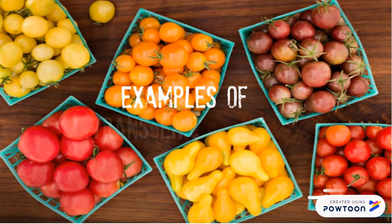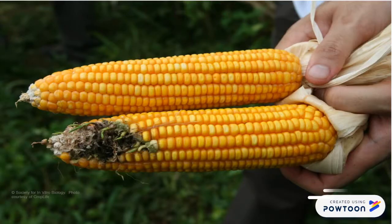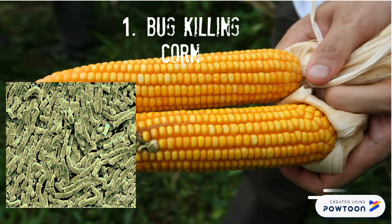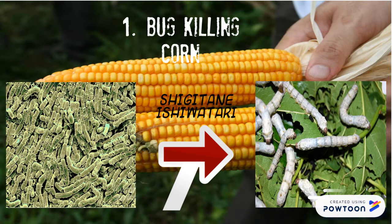I'm going to proceed with the examples of transgenic plants. The first example is bug-killing Bacillus thuringiensis, which was first discovered by Shigetane Ishiwatari while investigating the death of a mass of silkworms caused by sotto disease in 1901.